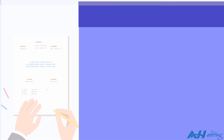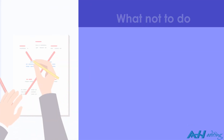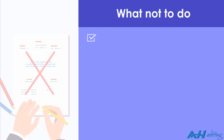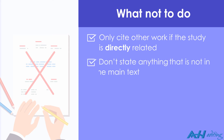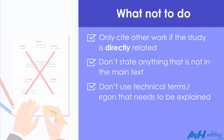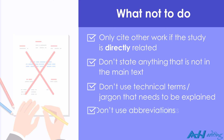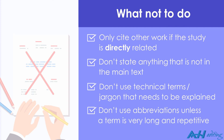Now, let's take a few seconds to look at what you should not do. You should only cite other work if the study is directly related. Be sure not to state anything that is not in the main text. It should be understandable by a general readership, so don't use any technical terms or jargon that needs to be explained. It's not good to use abbreviations, unless a term is very long and repetitive.